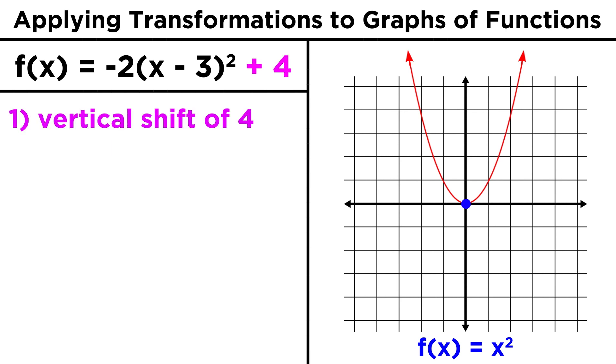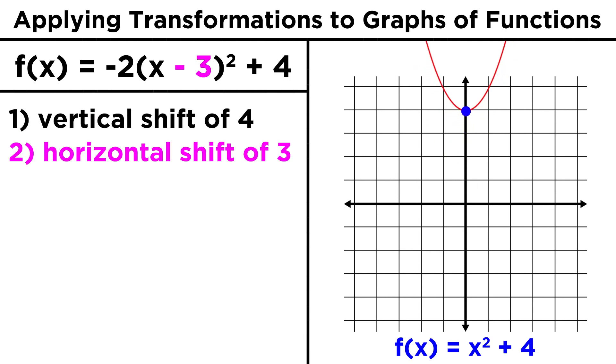First, there is a vertical shift of four, so let's bump this vertex up four. Then, there is a horizontal shift of three to the right. Remember, for the horizontal shift, a negative number here produces a shift in the positive direction, so we bump the vertex three to the right.